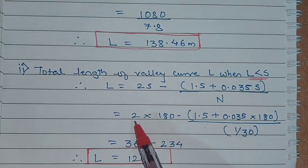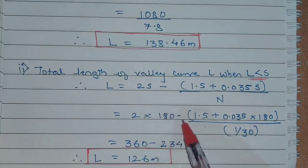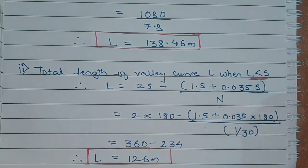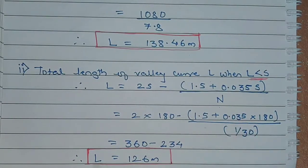Substituting the values we get 2 into 180 minus 1.5 plus 0.35 multiplied by 180 divided by 1 by 30. This is the angle of deviation. The total length of the valley curve when L equals the stopping sight distance will be equal to 126 meters.